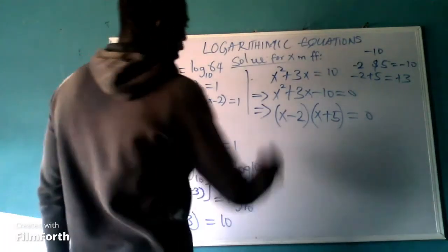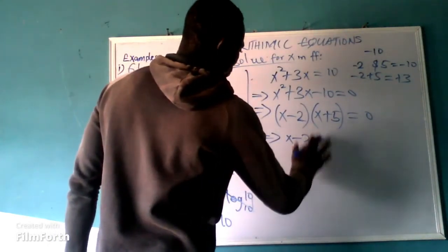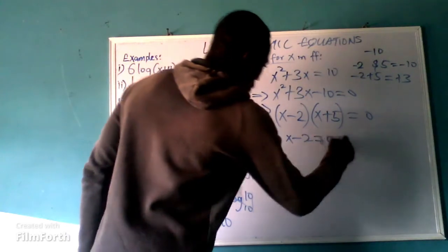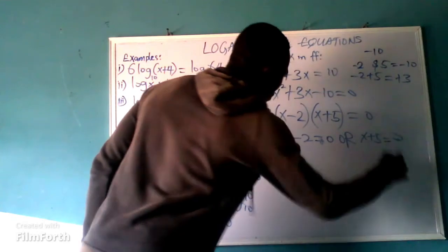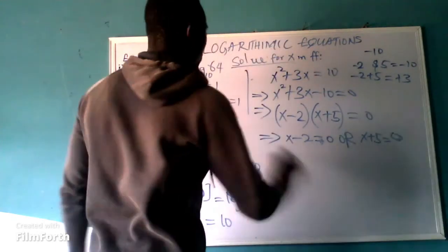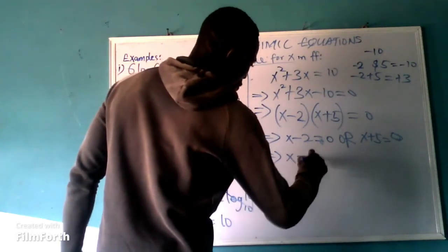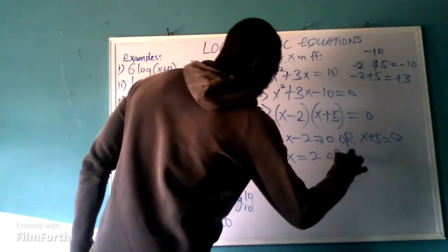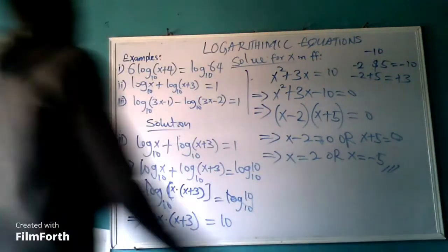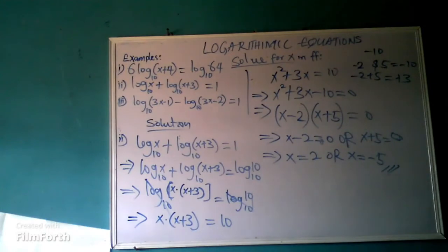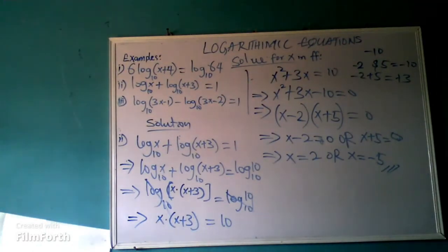This implies that x minus 2 equal to 0, or x plus 5 equal to 0. Therefore x is equal to 2, or x is equal to minus 5. And this is our final answer for question number 2.